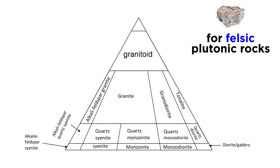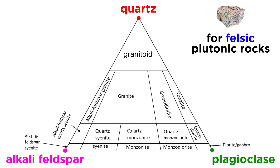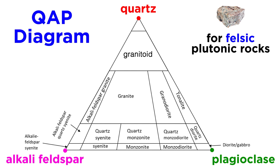For felsic plutonic rocks, names are based on the relative amounts of quartz, plagioclase, and alkali feldspar, which are placed at the corners of a triangular or ternary diagram called a QAP diagram. Plagioclase-rich rocks are called diorite, quartz-rich rocks are called granitoid, and alkali feldspar-rich rocks are called syenite. Rocks of intermediate composition are called granite if they are quartz-rich, and monzonite if they are feldspar-rich.